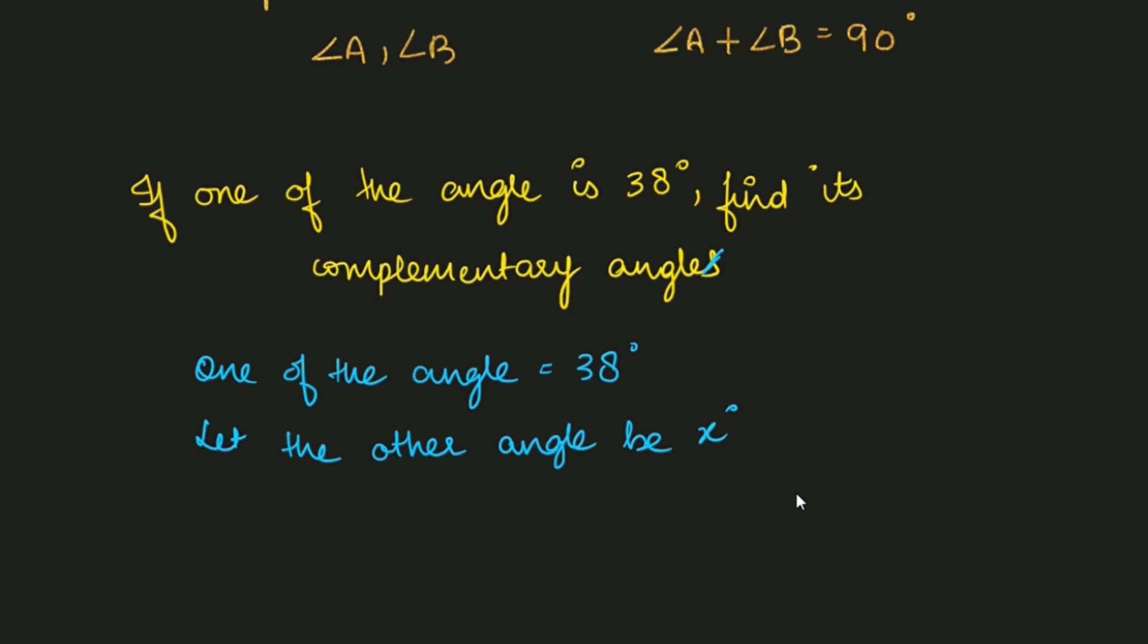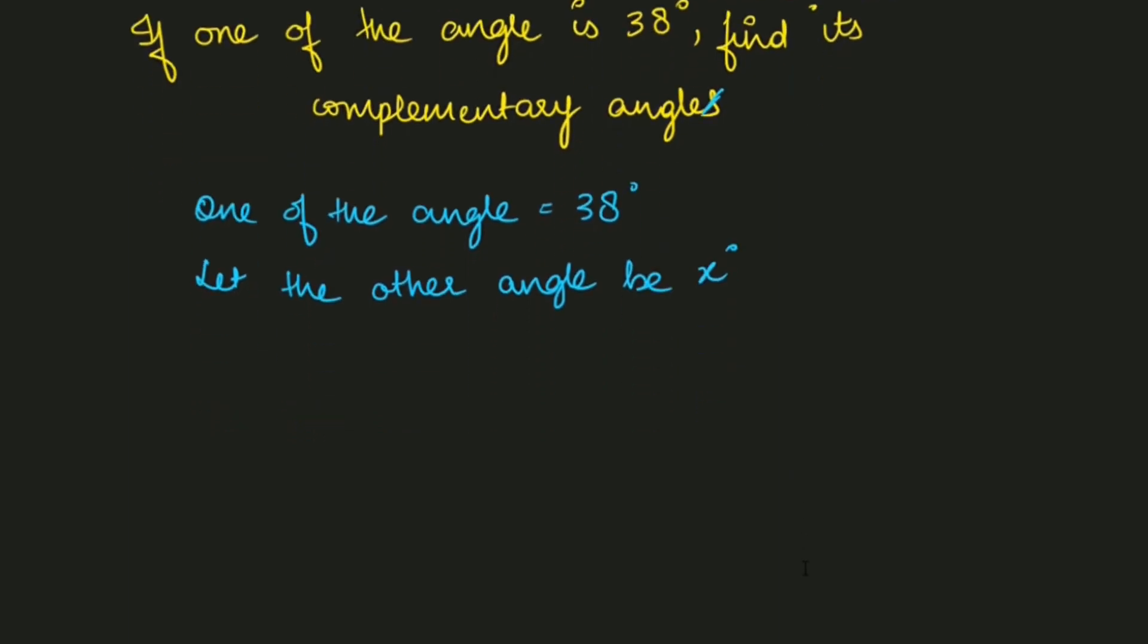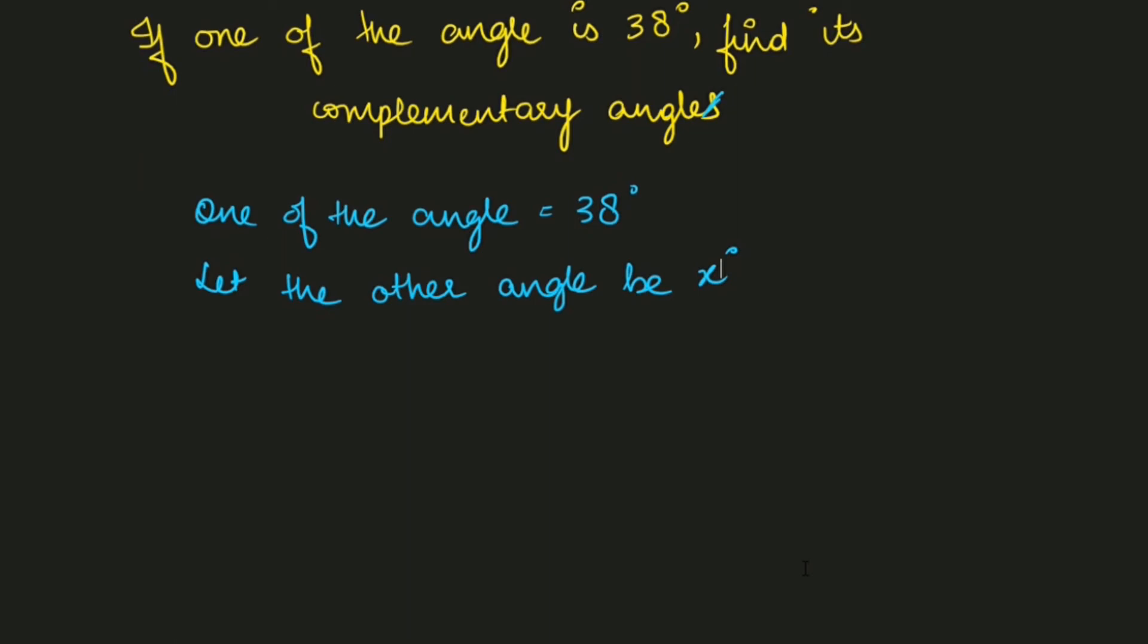What is the condition for two angles to be complementary? To hum kya kareenge - two angles ko jab hum add karte hai, to yahaan par 38 degrees plus x degrees is equal to 90. Jab ye 90 honge tabhi to ye complementary honge.